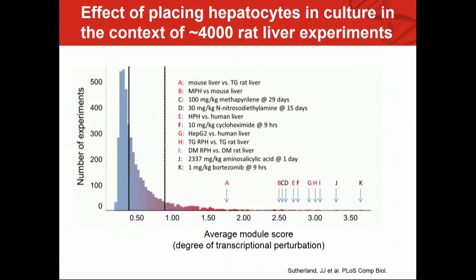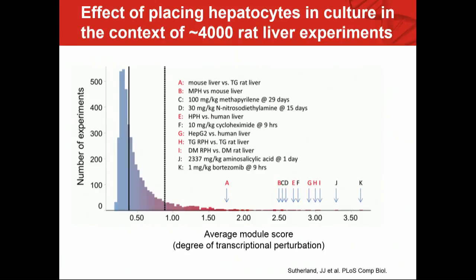Treating hepatocytes in culture as a treatment and looking at the underlying module perturbations: putting hepatocytes in culture gives you about a three standard deviation perturbation on the average of every single module. Whereas if we say a mouse liver is a treatment relative to a rat liver, it's back here — and in this paper we actually show that mouse is more predictive of rat than rat hepatocytes are predictive of rat.